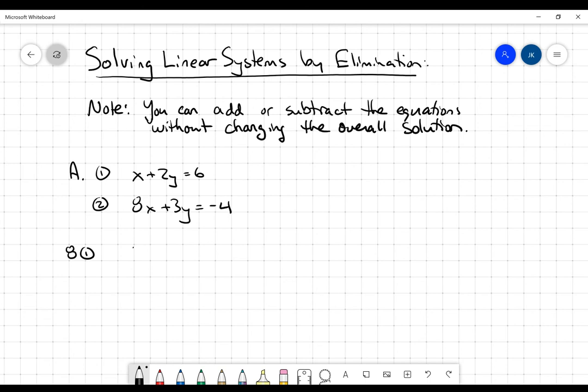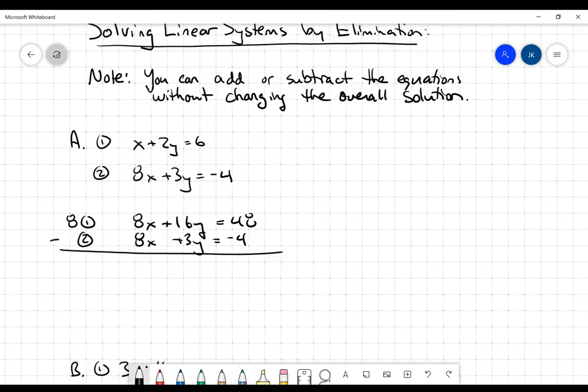Okay, and that is going to get me 8x plus 16y is going to equal 48. And I'm not going to do anything to equation 2. I'm going to leave it as 8x plus 3y is equal to negative 4. And now, because I've got 8x and 8x, I'm going to subtract those two equations.